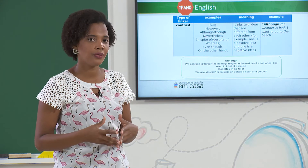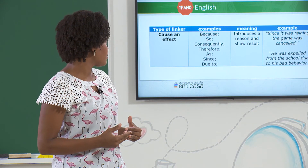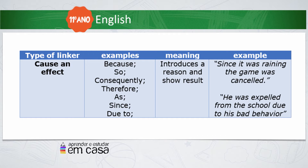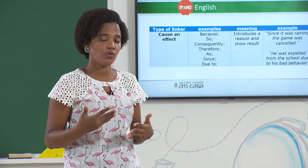Now, if I want to talk about the cause or effect of something — to show the result or to explain the reason — I can use these linkers: because, so, consequently, therefore, as, since, due to. They introduce a reason or show result. For example: 'Since it was raining, the game was canceled.' Or: 'The game was canceled because it was raining.' And: 'He was expelled from the school due to his bad behavior.' So, these are used to give a reason or show result.